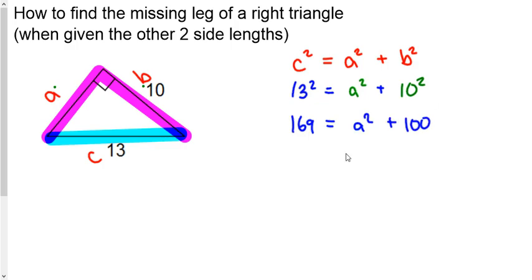And now you've got to ask yourself, how can I solve for this variable right here? Well, it's not too bad really. All you have to do is solve it like you would any other equation. Isolate the variable. If we're adding 100, subtract it from both sides we get 69 equals A squared.